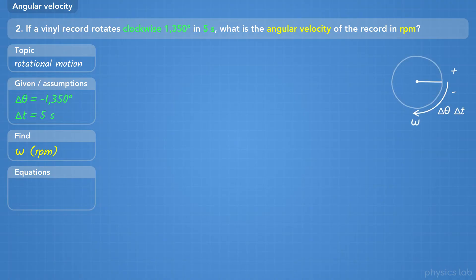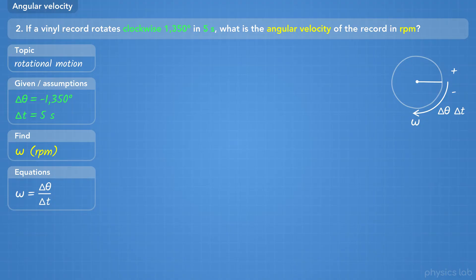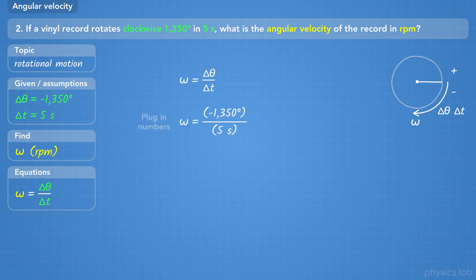Here's a rough sketch for this problem. We have a record with a line drawn on it, an angular displacement in the clockwise direction, a period of time, and the arrow is labeled with omega, the angular velocity. We also labeled the conventional positive and negative directions. Since we're looking for angular velocity, we'll use the equation: angular velocity equals angular displacement over time.